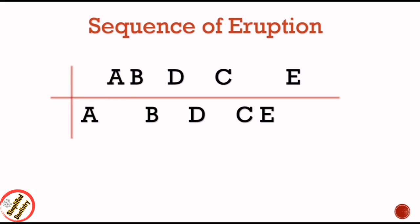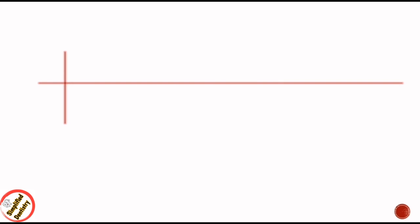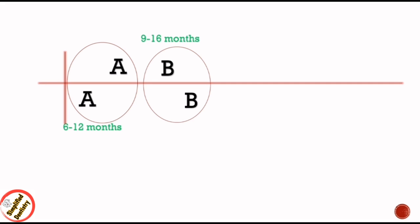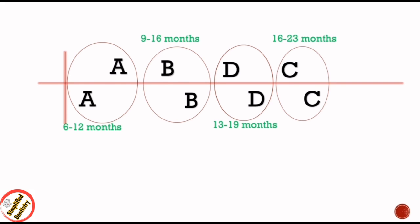There are two ways to remember the eruption sequence — either by remembering the age within a range or the mean age. The first teeth to erupt are lower and upper central incisors between 6 to 12 months. Next are lateral incisors between 9 to 16 months, followed by first molars from 13 to 19 months, canines from 16 to 23 months, and second molars from 23 to 33 months.